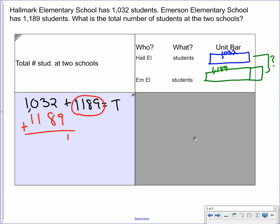So 2 plus 9 is 11. That would be 12. That's 2 and that's 2. So our total is 2,221.